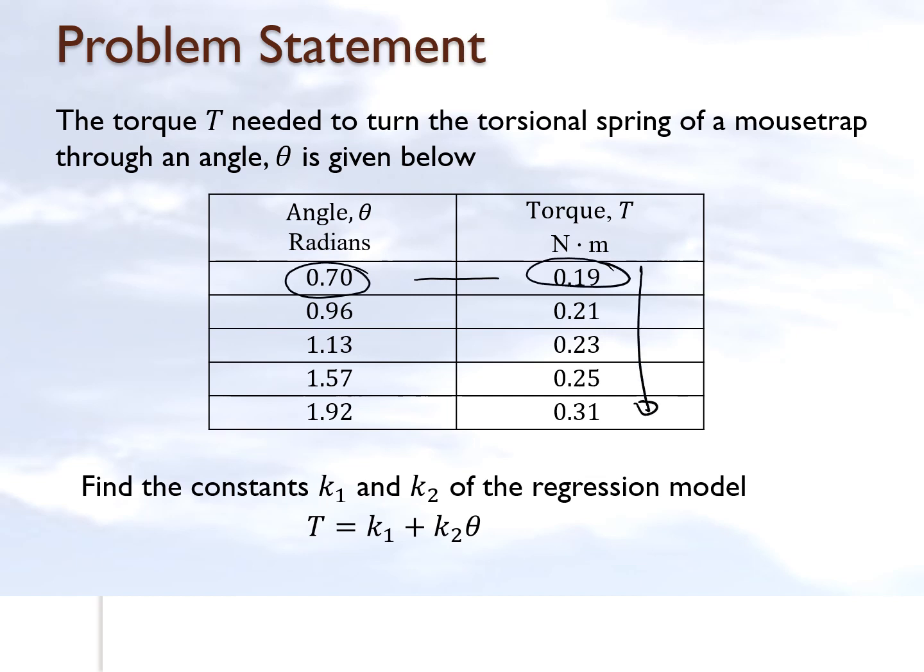So we are relating it to a general straight line model where torque is equal to k1 plus k2 times theta, and what we want to do is find out what these two constants of the regression model are. So let's go and see how we can apply the formulas which we learned in the previous lesson to find k1 and k2.